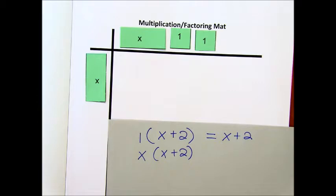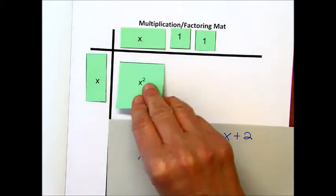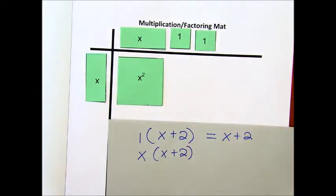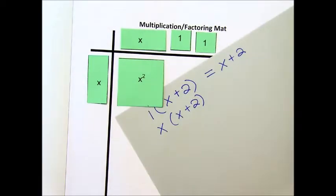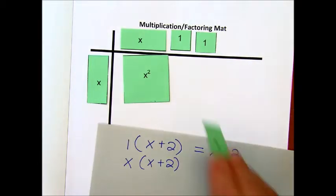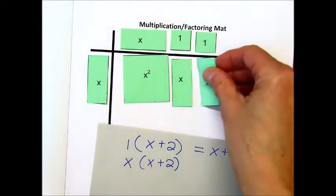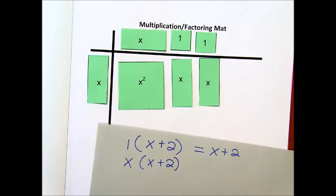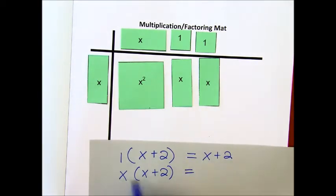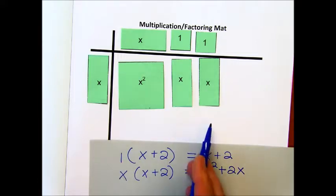Now, x times x is going to be x squared. And x times 2 is going to give you 2x's. And so we're going to have an x here and an x here. So, our answer will be x times x, that's x squared, and x times 2, that's going to be 2x. And that's what we have.